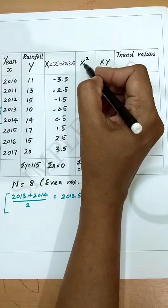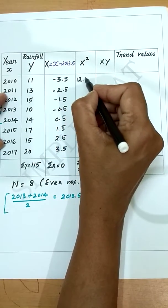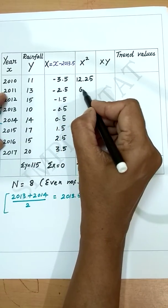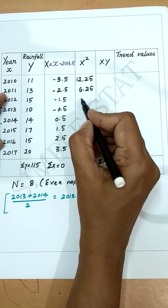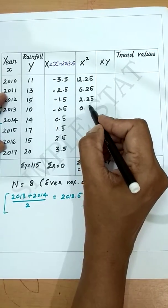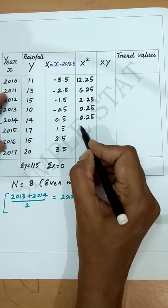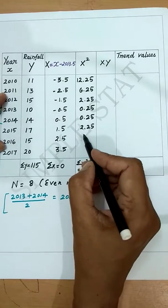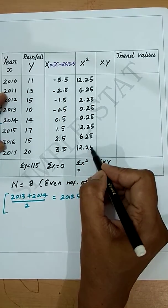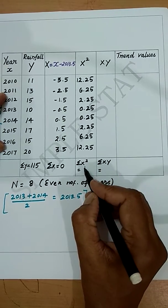The next step is to find X². The values are: (−3.5)² = 12.25, (−2.5)² = 6.25, then 2.25, 0.25, 0.25, 2.25, 6.25, and finally 12.25. Adding all these gives summation X² = 42.